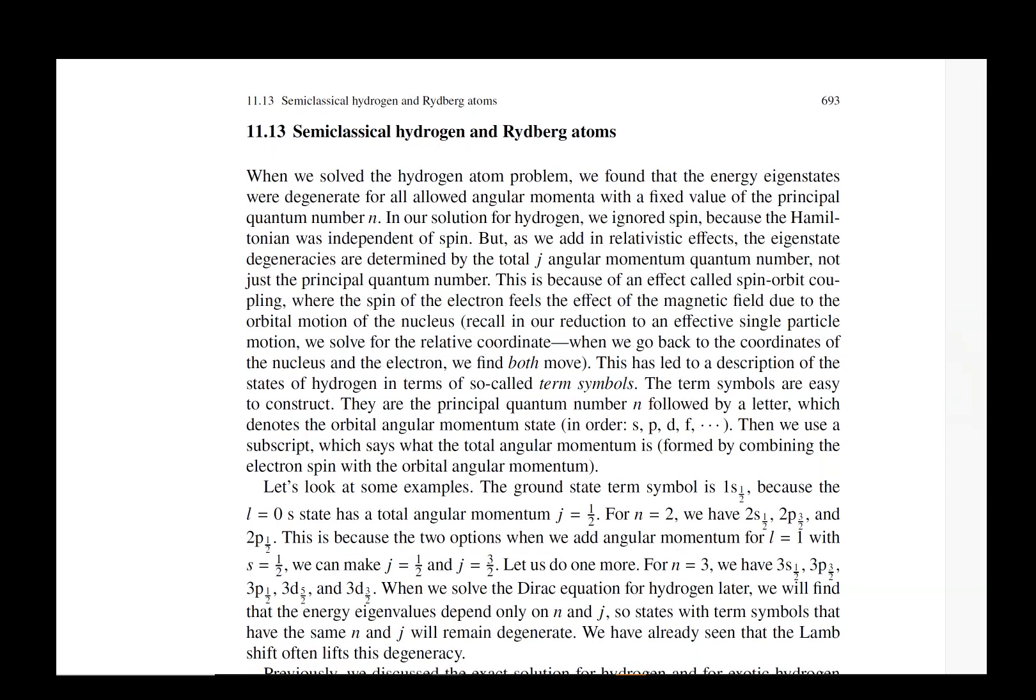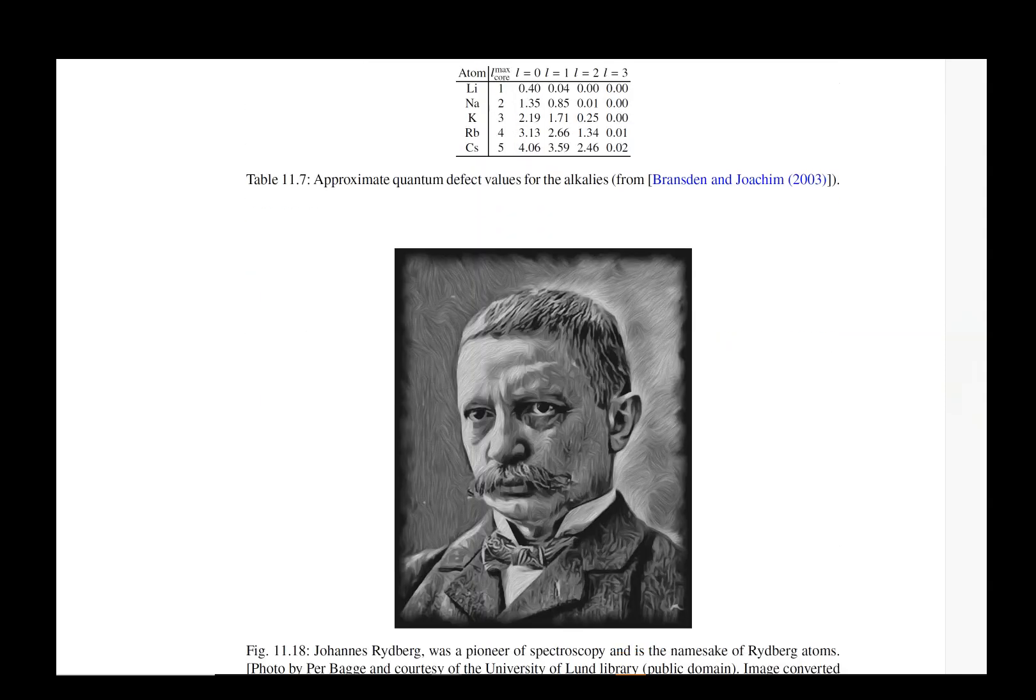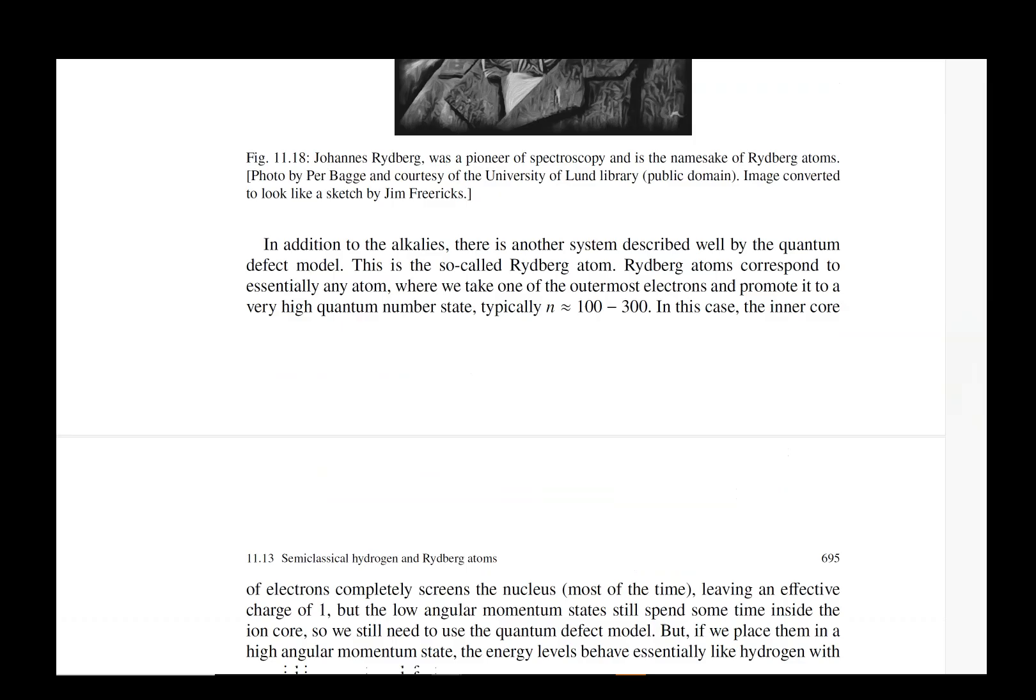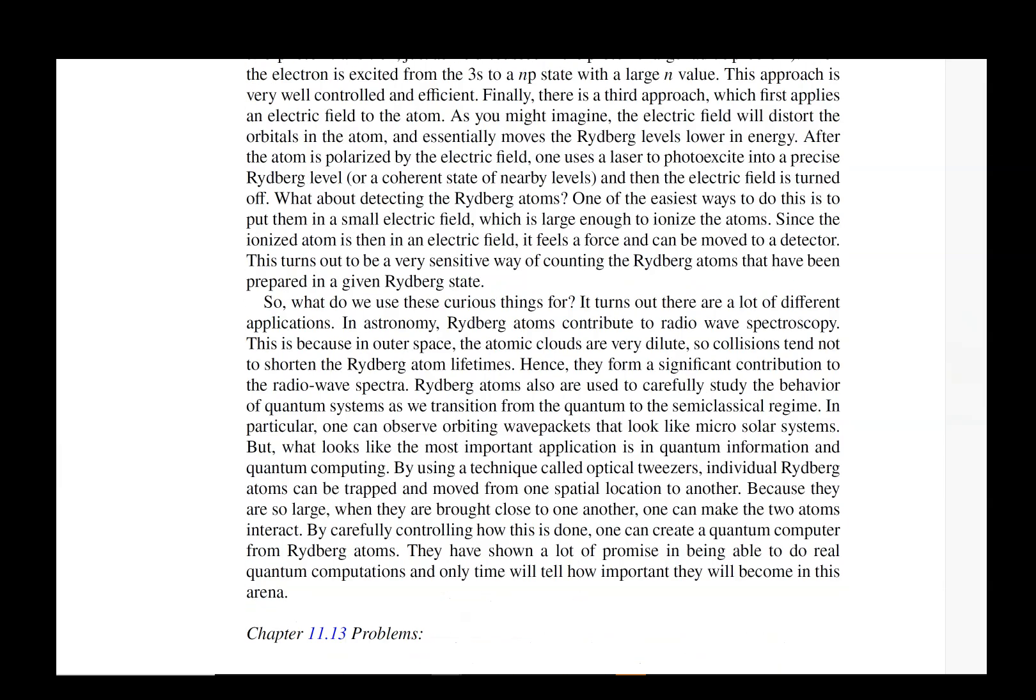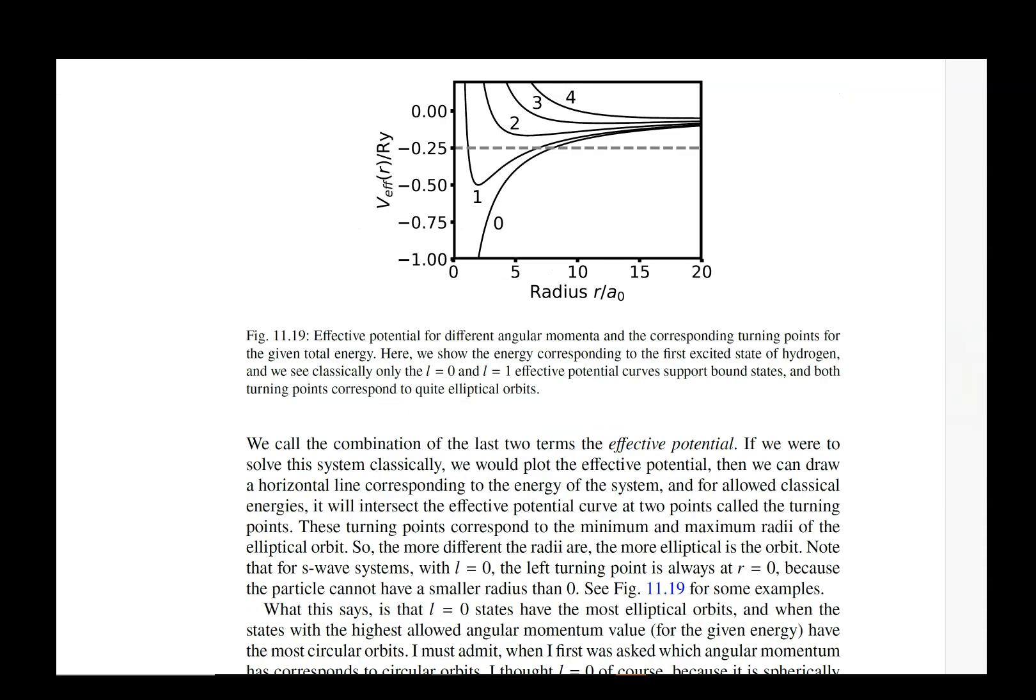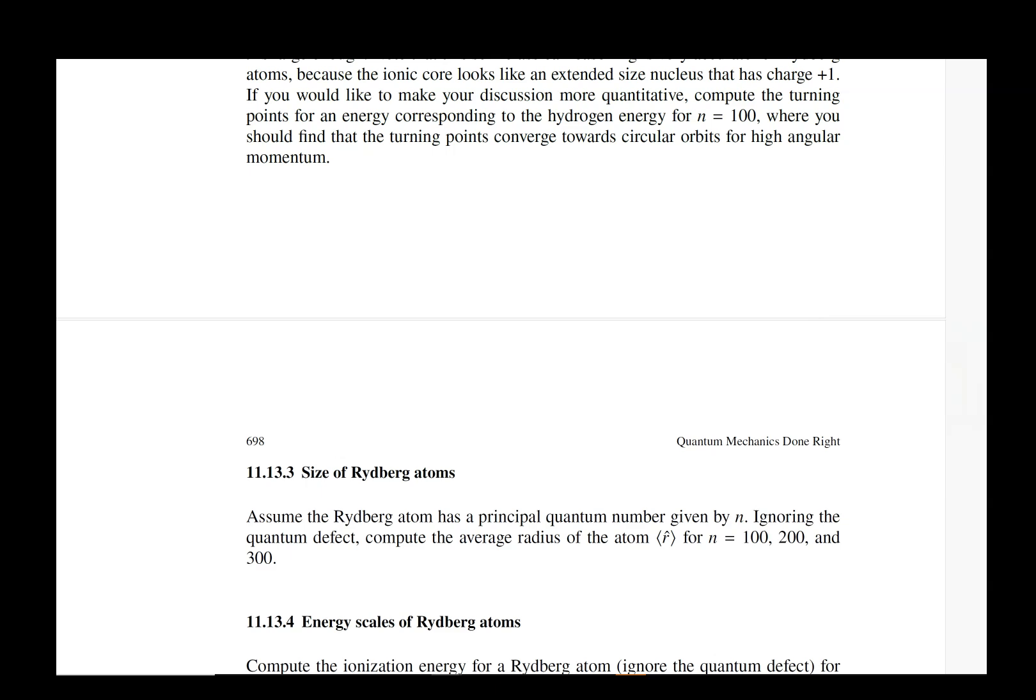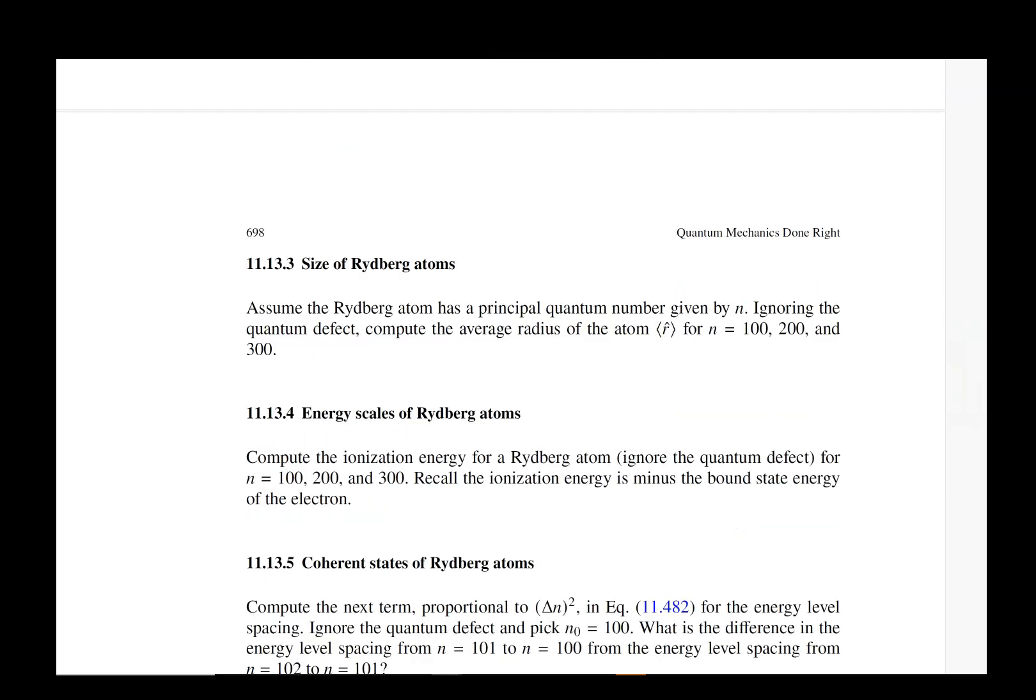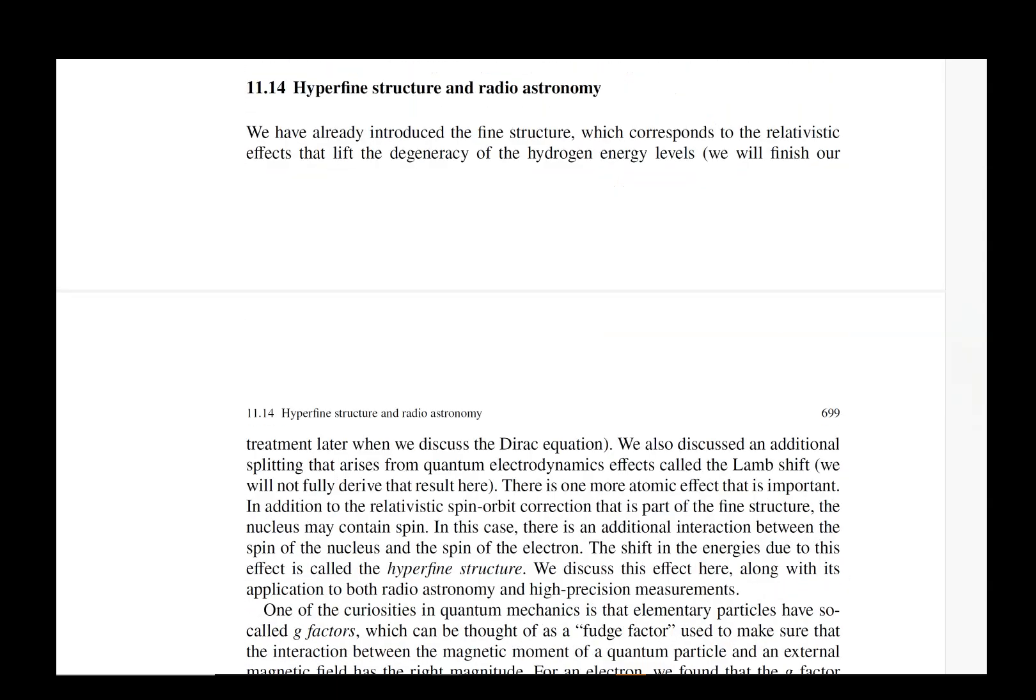Then we get to semi-classical hydrogen and Rydberg atoms. There's a lot of interesting behavior here. There's a picture of Rydberg. What's really nice about Rydberg atoms is you can actually think of the electrons as orbiting like a planet around the Sun. When you get to Rydberg atoms, it's not exactly that, but it is really close to that. Rydberg atoms are huge—instead of being angstrom size, they tend to be micrometer sized.